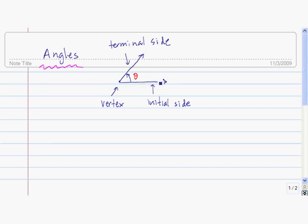An angle is formed by rotating a ray about its endpoint. The initial position of the ray is called the initial side of the angle. The final position of the ray is called the terminal side of the angle. The point at which the ray is rotated is called the vertex of the angle.